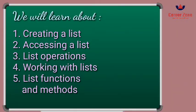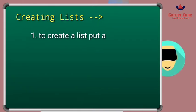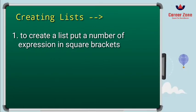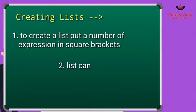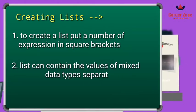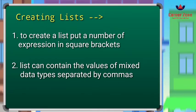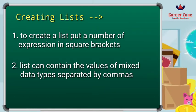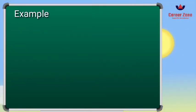Let us begin with the first topic: how to create a list. The first thing to keep in mind is that the expressions included in a list need to be enclosed in square brackets. The second point is that a list can contain values of mixed data types — integer, float, or string. The items inside the list should be separated by commas.